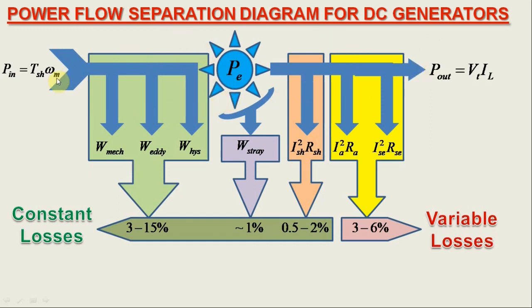In the second partition, the net electrical output power is obtained after subtracting the electrical losses from the electrical power developed in the armature of the DC generator. This way, the power flow separation diagram can be used as a means of analysis of DC generator efficiency.